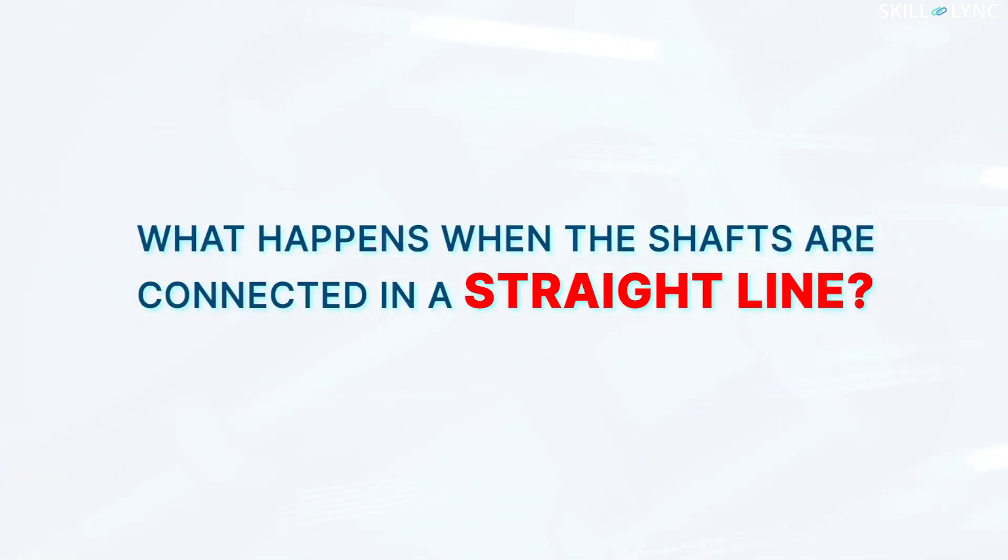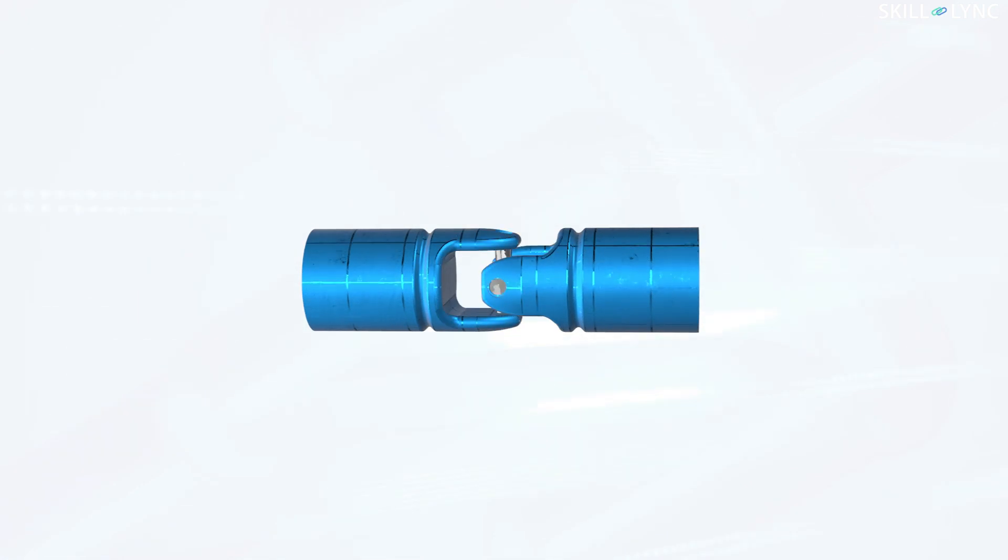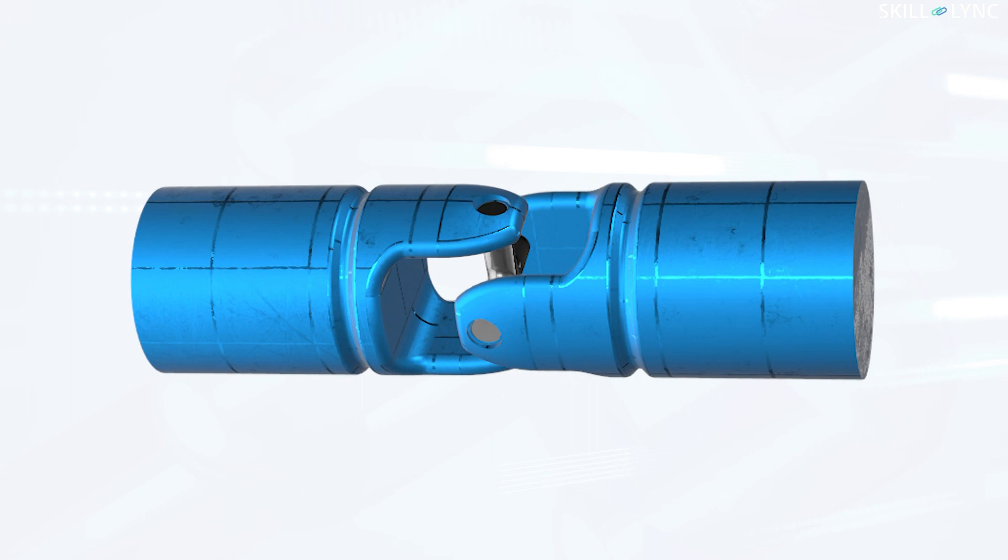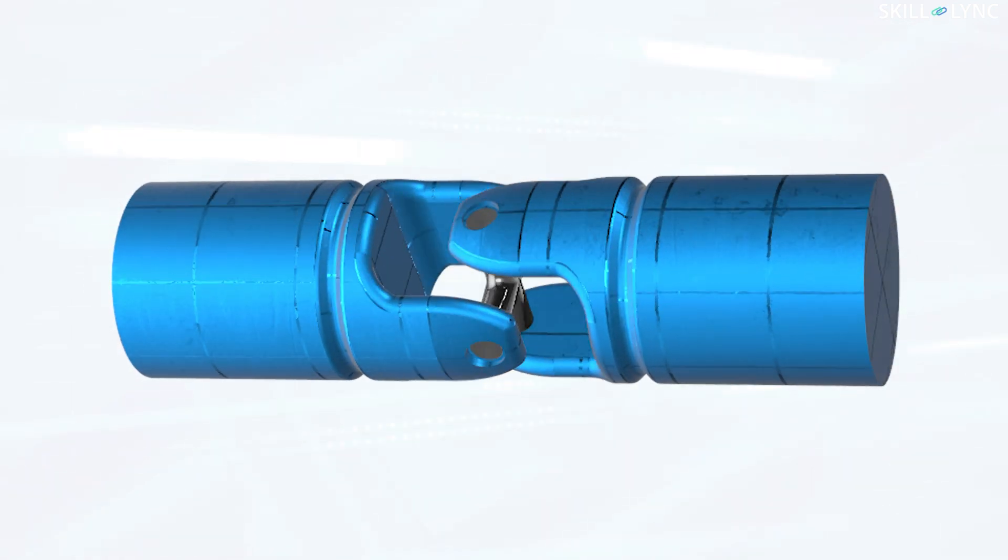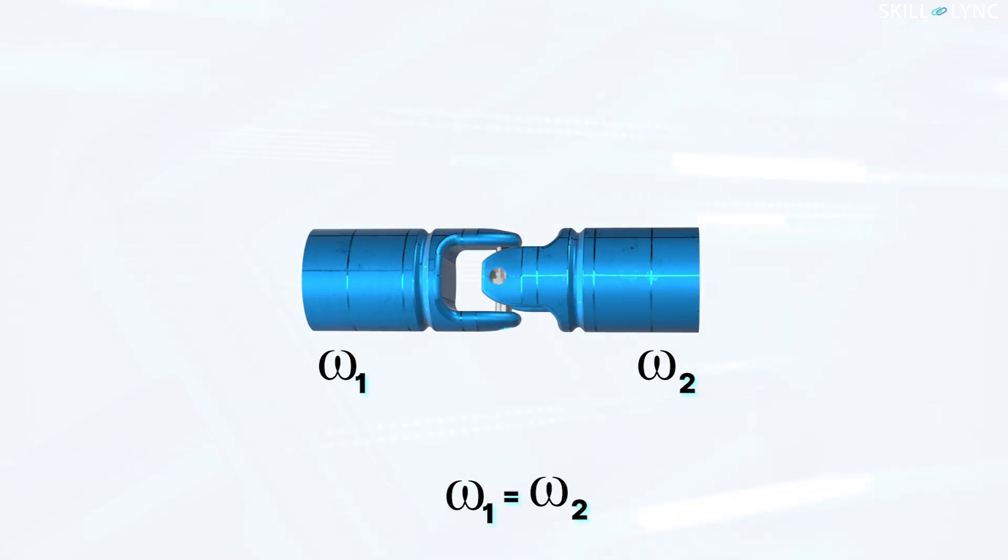Let's see what happens when the shafts are connected in a straight line. When the driving member rotates, the shaft connected to it rotates as well. The rotation of the shaft makes the yoke turn the cross member. The turning cross member in turn rotates the driven shaft. In this case, the speed of the driving and the driven shaft will be the same.